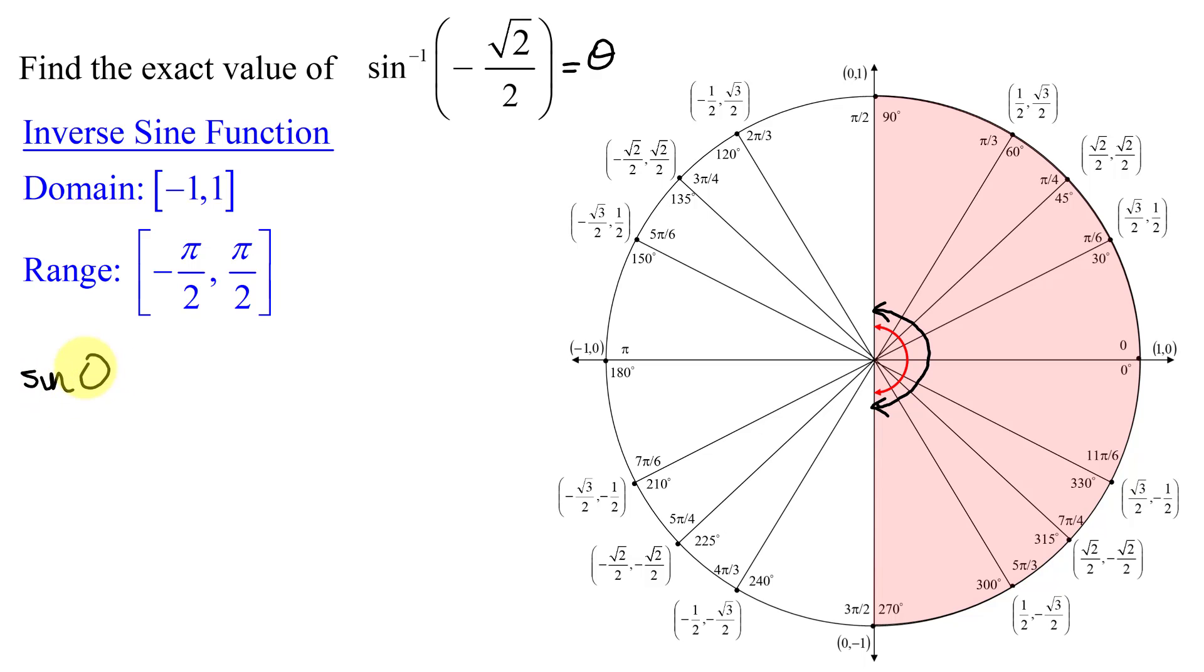This means that the sine of theta equals negative the square root of 2 over 2, and what is the restriction? Theta must lie in the region negative pi over 2 to pi over 2.